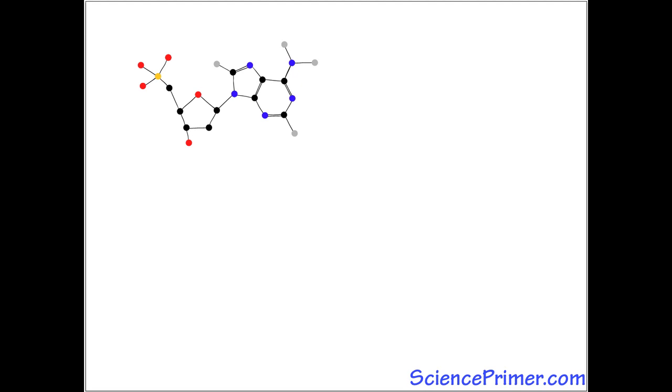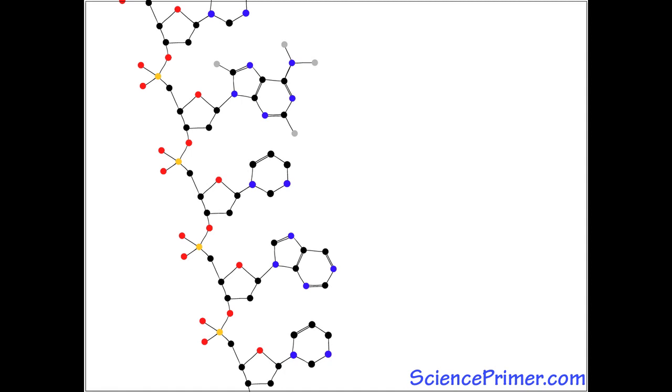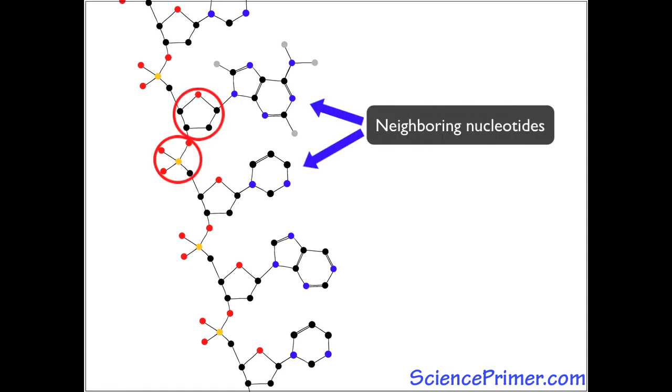DNA and RNA in living cells exist as strands called polynucleotides. Polynucleotides form via covalent bonds between sugar and phosphate subunits of neighboring nucleotides along a chain.